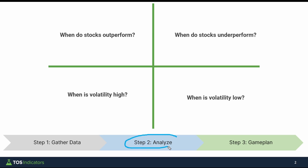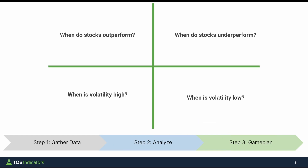Once I gather the data, I'm manually transcribing it to Excel. That allows me to then perform some basic analysis, things like mean, average, standard deviation, and create some graphs. Once I have those graphs, we can use that to create a final game plan of how we'd like to trade the S&P 500.